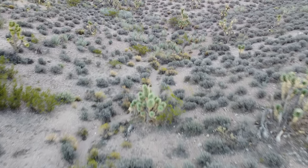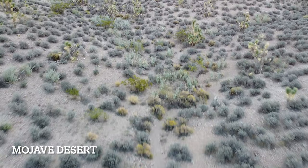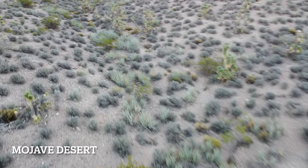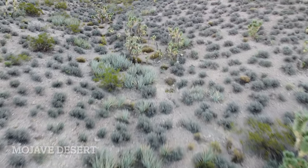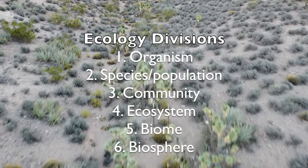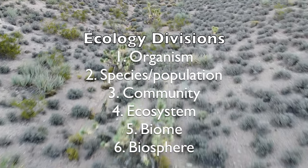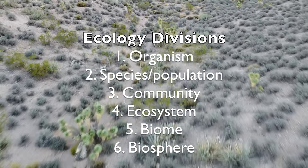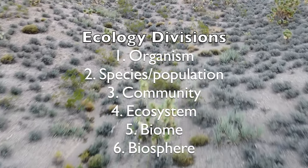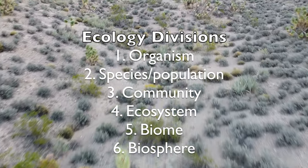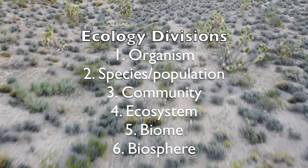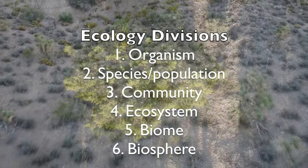It is very helpful when communicating about things in ecology to use words that have different organizational meanings. The six levels of ecological organization, as I prefer them, are an organism, the species or population, a community, the ecosystem, biomes, and the entire biosphere.